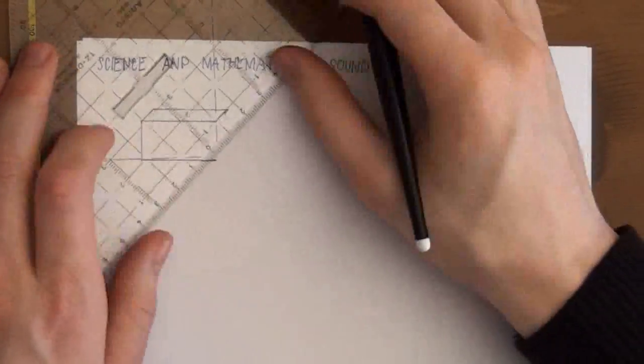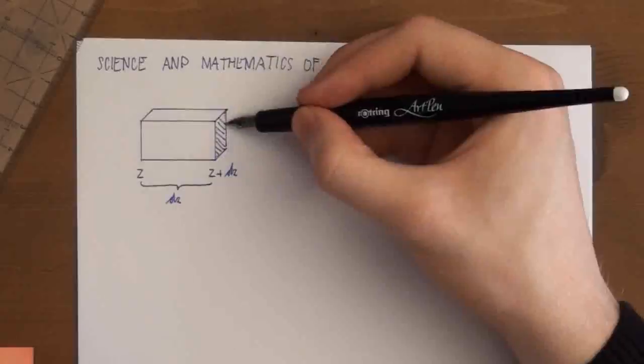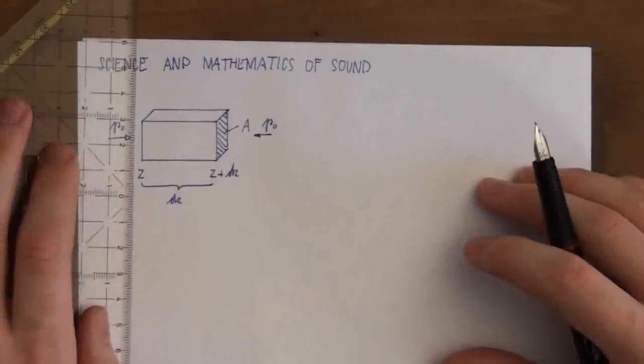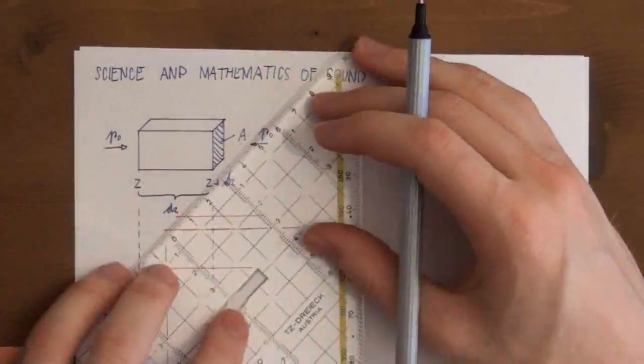Imagine a section of air in equilibrium. The ends should be located at Z and Z plus DZ and the cross section should be A. The air pressure at both ends is P0. When the sound of your viola propagates it displaces the section of air.